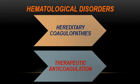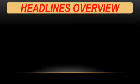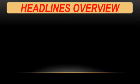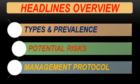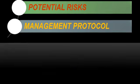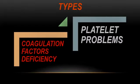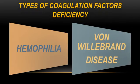Let's start with hereditary coagulopathies. We are going to discuss types and prevalence, potential risks, and the management protocol. We have two main categories: coagulation factor deficiency and platelet problems. Within coagulation factor deficiency, we have two main types: hemophilia and von Willebrand disease.